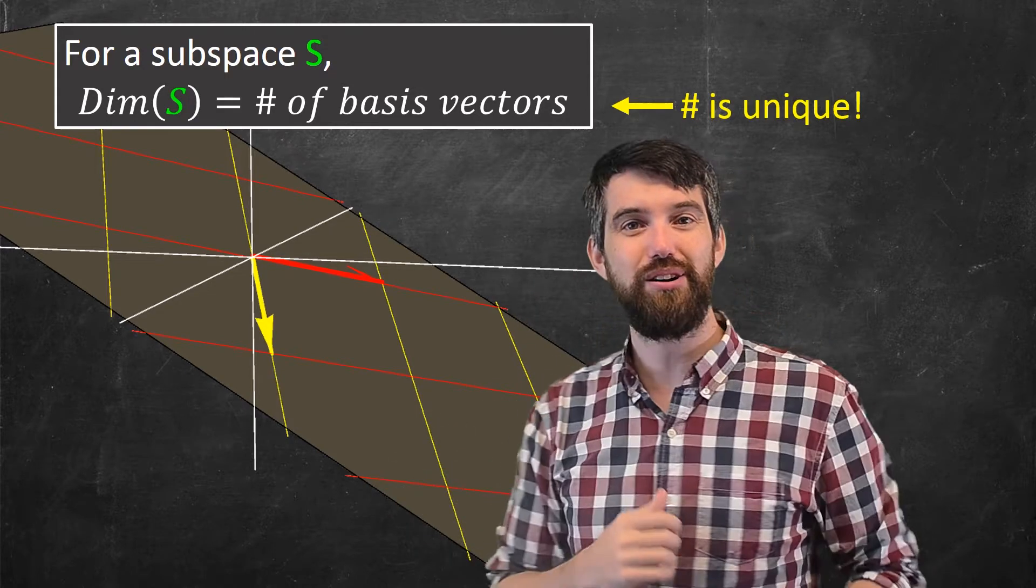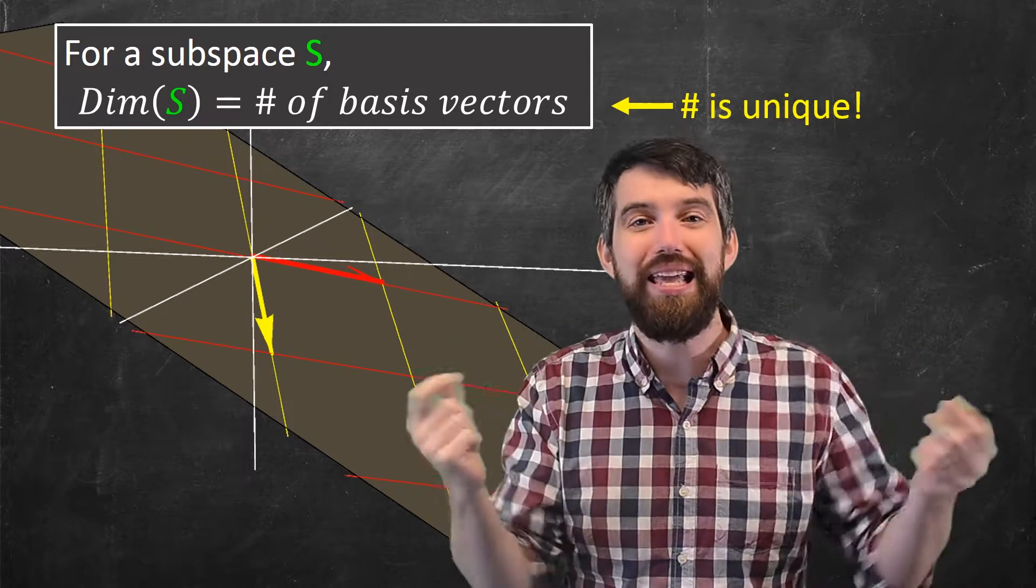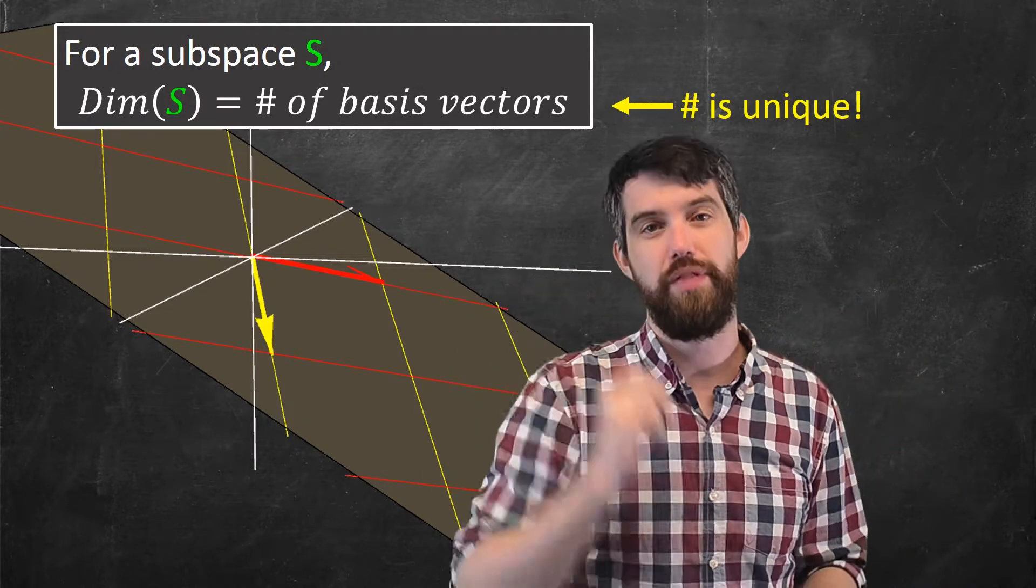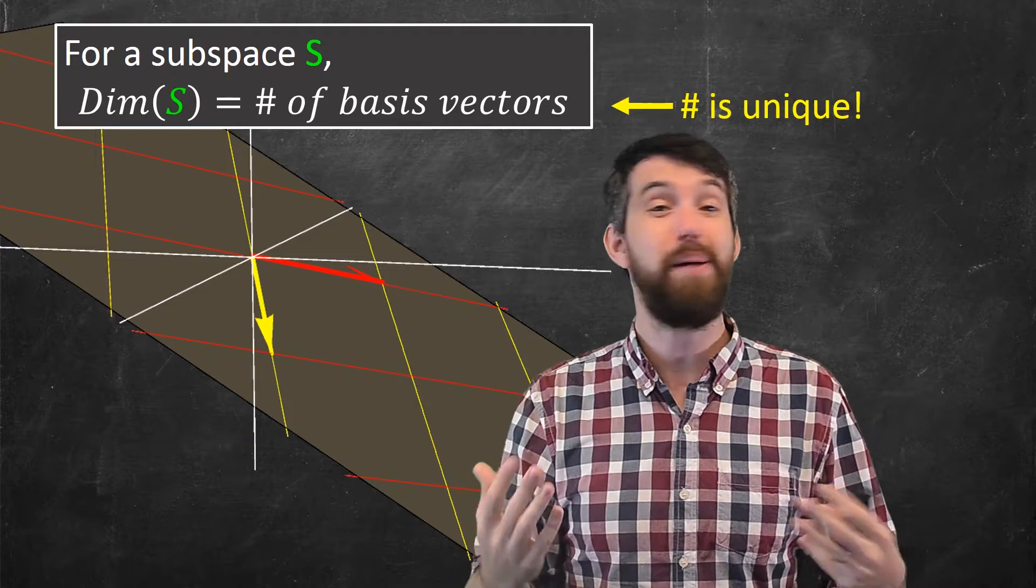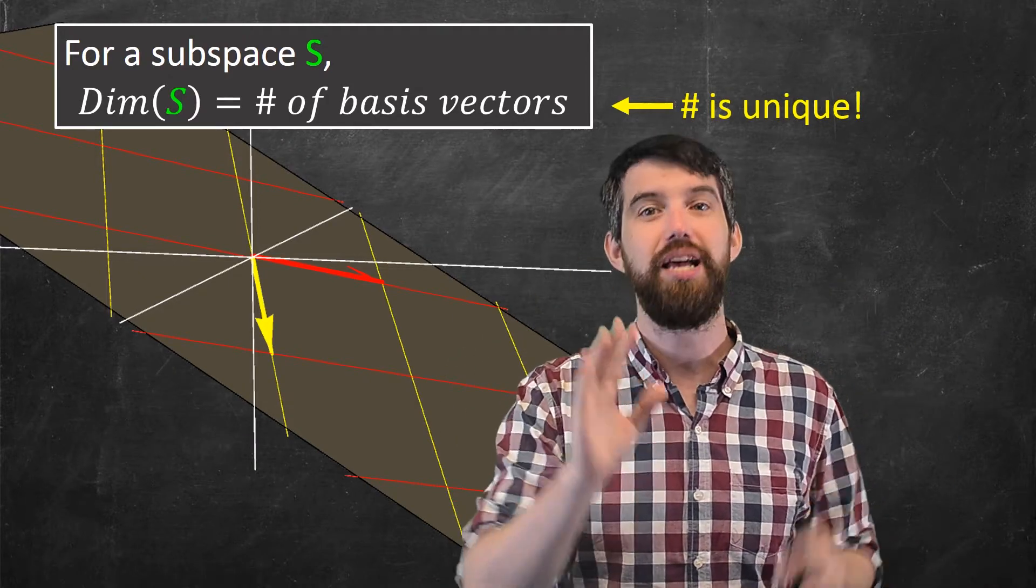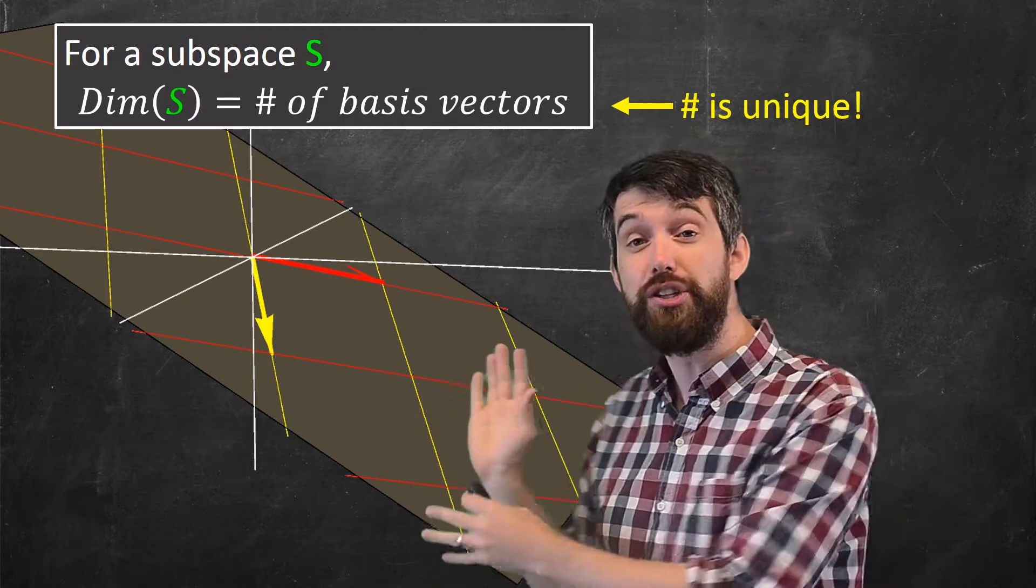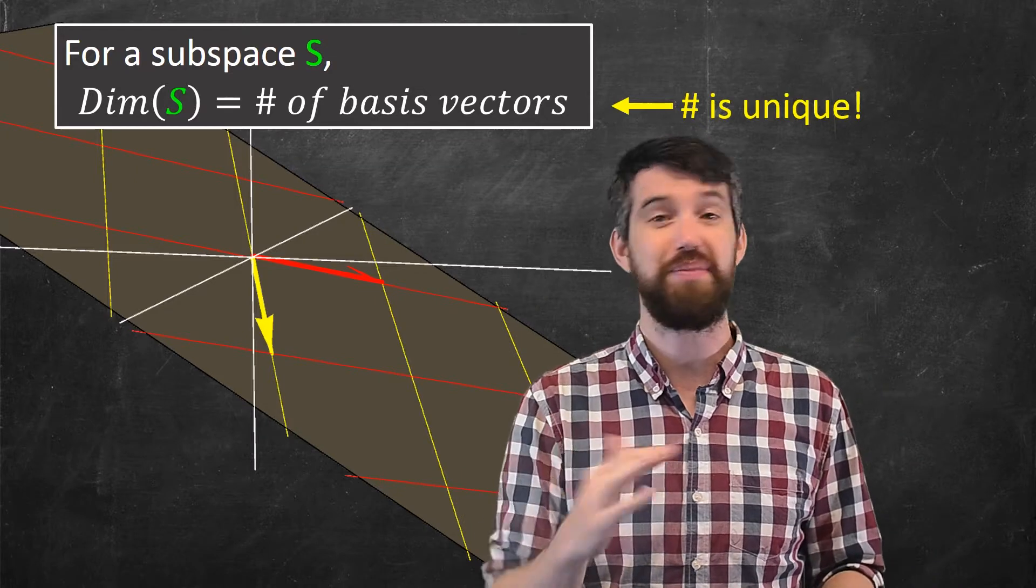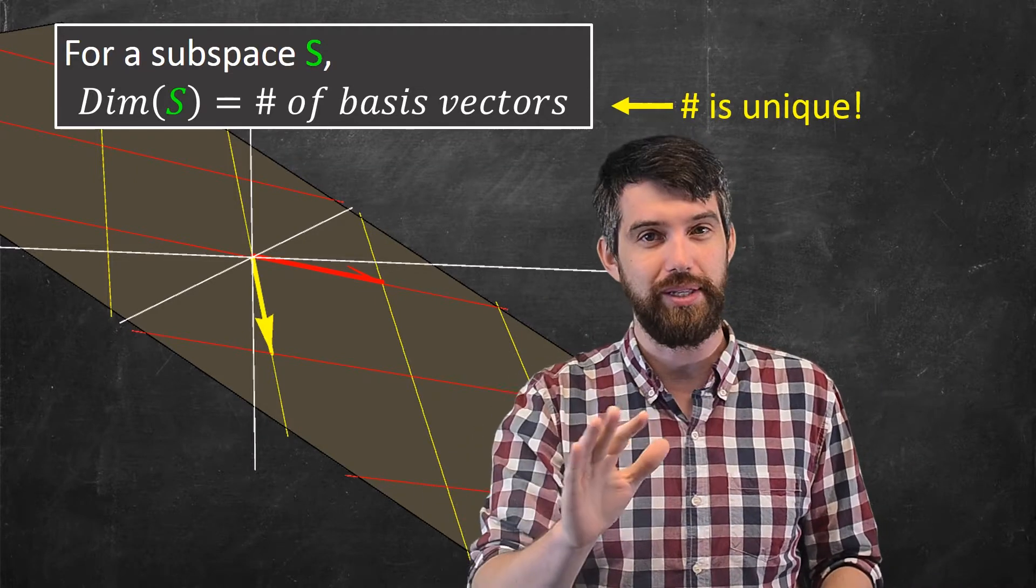So in this particular subspace, we saw two different ways that I could write basis vectors, but both of those bases had two of them in them. And indeed, this is a theorem, I'm not going to prove it in this video, but it's an important theorem that the number of basis vectors is unique. And so this definition is well defined, that you and I will always compute the same dimension of any subspace, because the number of basis vectors is always the same.